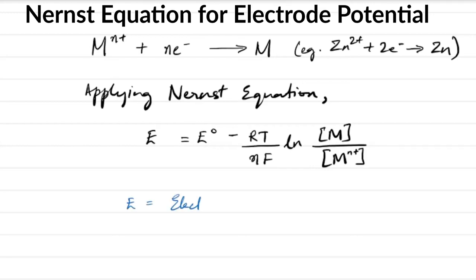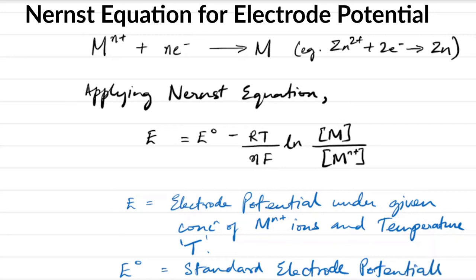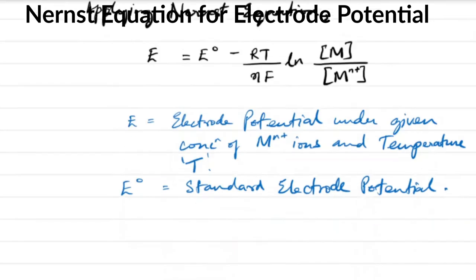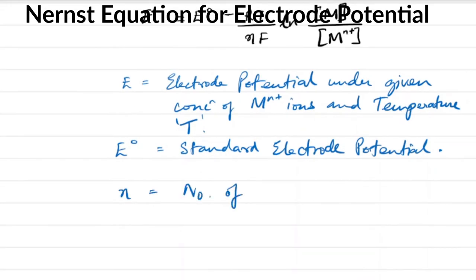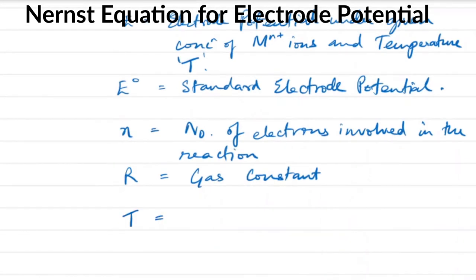Here, E is the electrode potential under the given concentration of the M^(n+) ions at temperature T, and E° is the standard electrode potential. R is the gas constant, T is the temperature in Kelvin, and F is one Faraday.